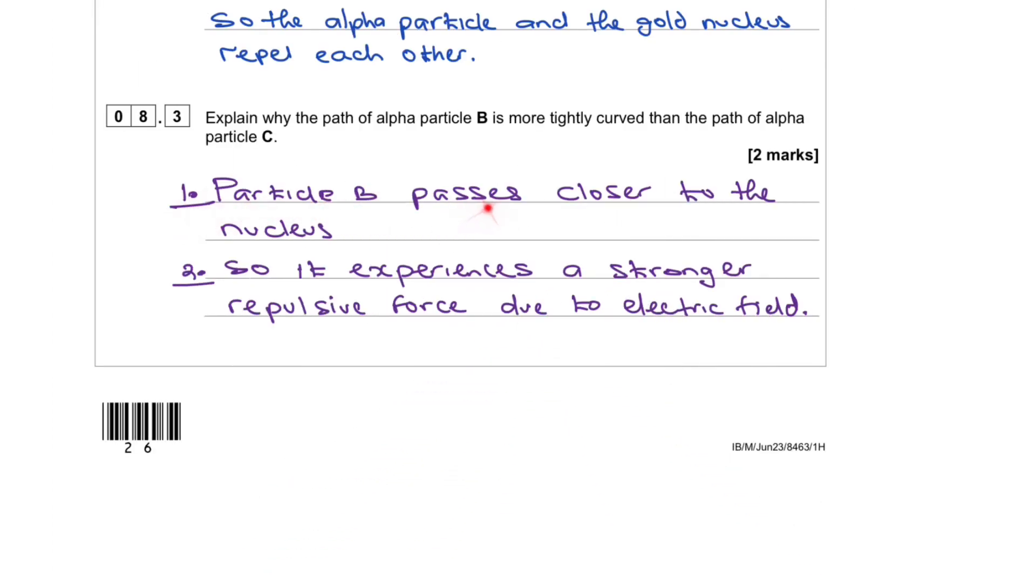The alpha particle B passes close to the nucleus so it's being repelled by the nucleus. So it's experiencing a stronger repulsive force due to the electric field.